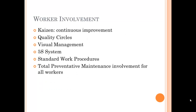Worker involvement focuses around these principles: Kaizen, which is continuous improvement; quality circles; visual management systems, which really help you see how things are going; the 5S system, keeping things ready to use; standard work procedures, meaning everyone operates the same equipment the same way with no black magic involved; and total preventative maintenance — also called total production maintenance — involving all workers in keeping the machine running so there aren't unforeseen breakdowns. Remember, you're working just-in-time, so you don't want unexpected dead times.